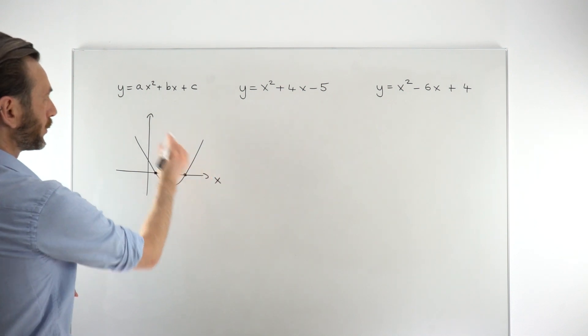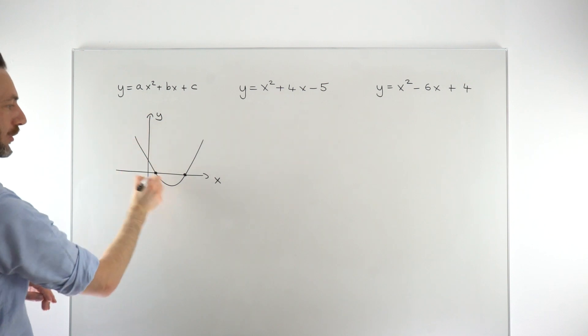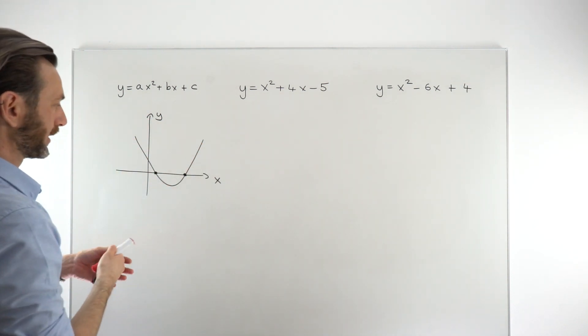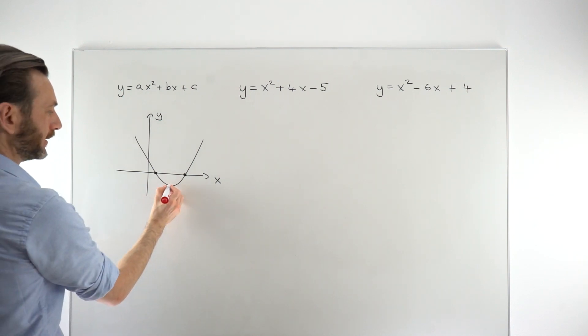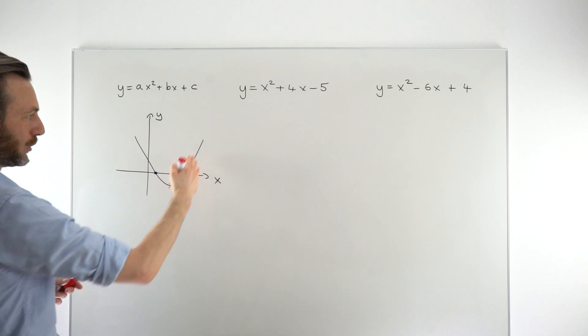So we've got a quadratic function. It makes a parabolic graph. And we can sketch that graph somewhere on an x, y axis. In this class, what we're considering is how to find this key point, which is the turning point, where the graph changes direction.